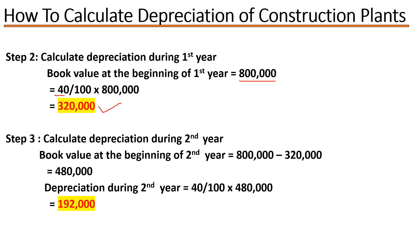Step 2: we calculate depreciation during the second year. The book value at the beginning of the second year is the book value from the first year minus what depreciated during that first year: 800,000 − 320,000 = 480,000. Depreciation during the second year is 40% × 480,000, giving us 192,000.